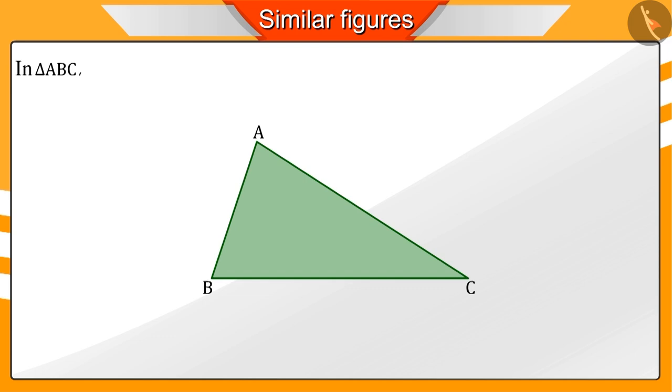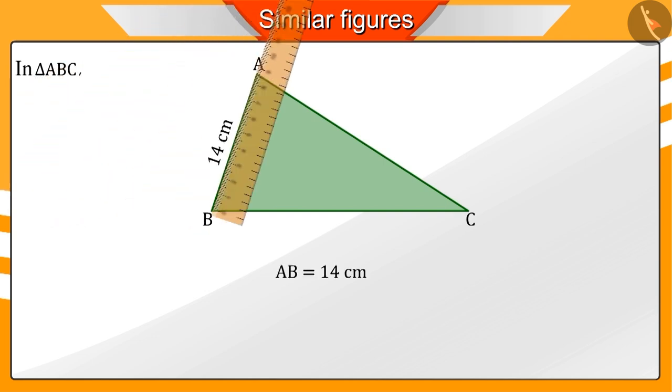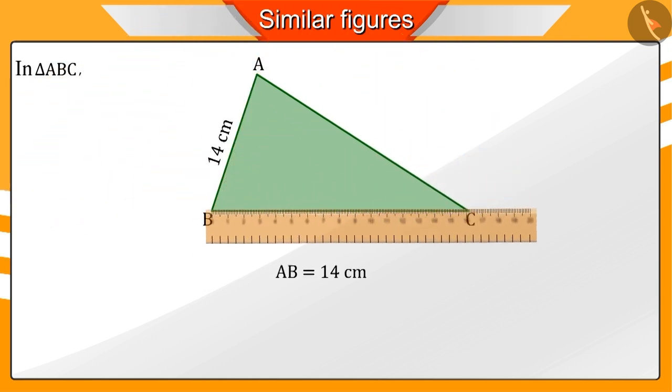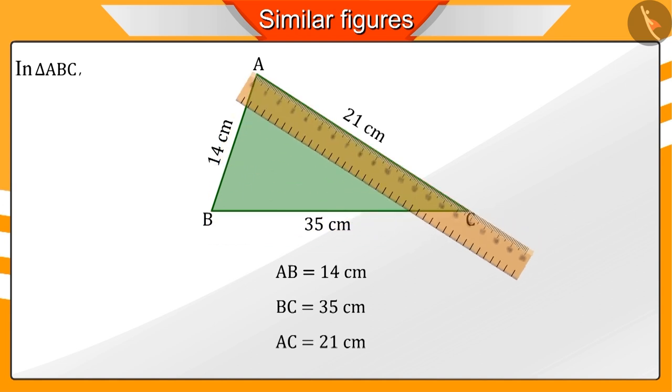When we measure the sides of this triangle, we find that AB is equal to 14 cm, BC is equal to 35 cm, and AC is equal to 21 cm.